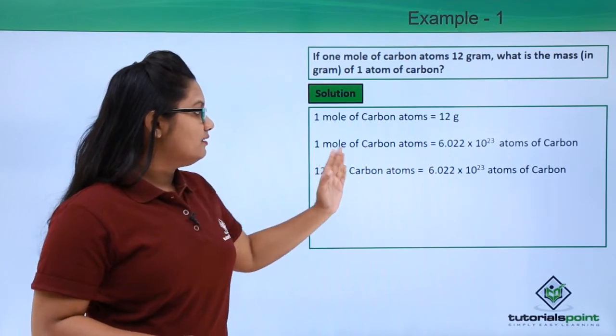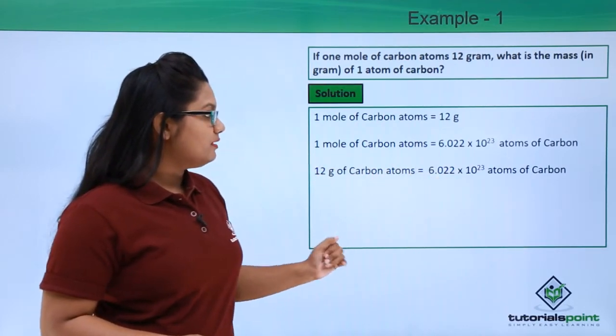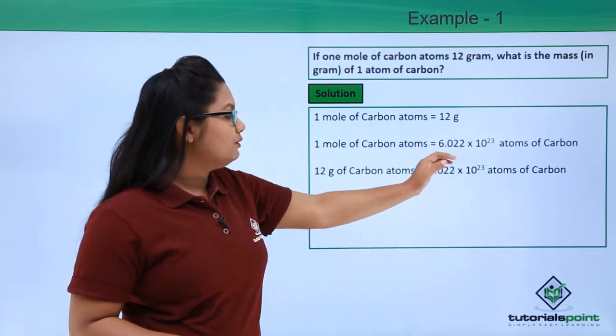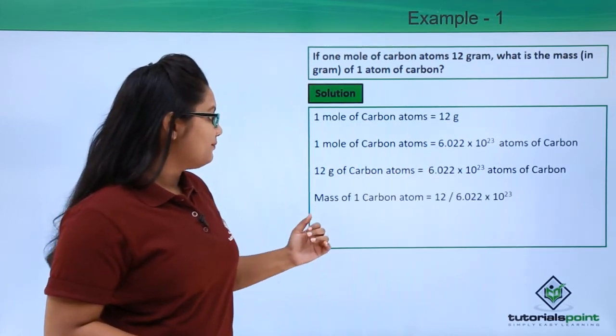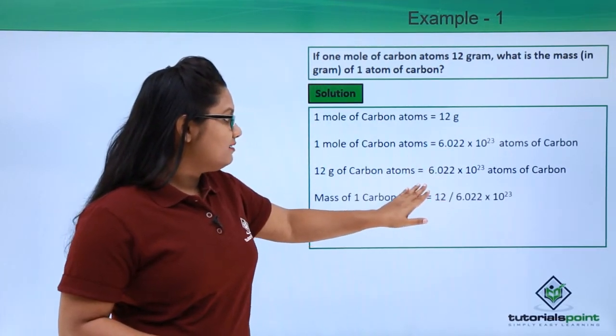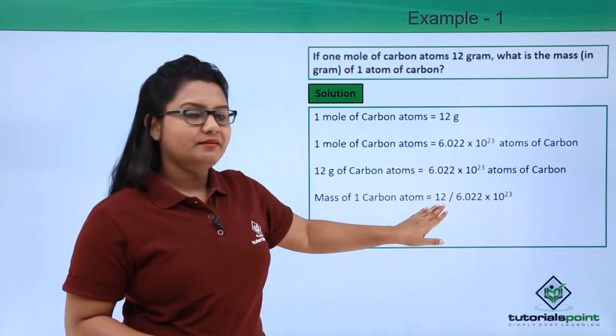Now if we want the mass of one atom of carbon, we need to take this number to the other side, and when it goes to this side, it divides 12 like this.